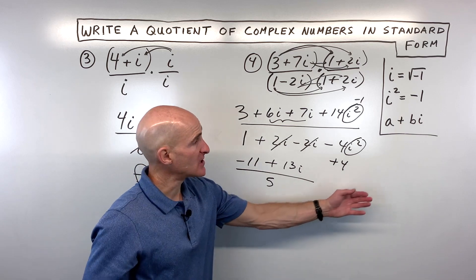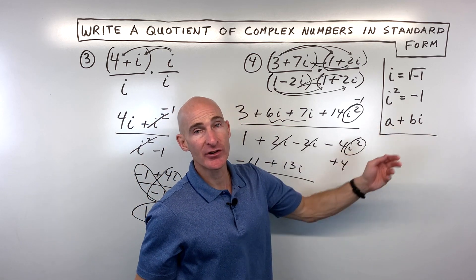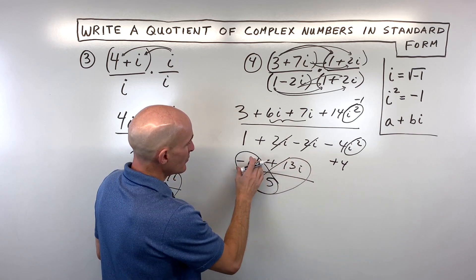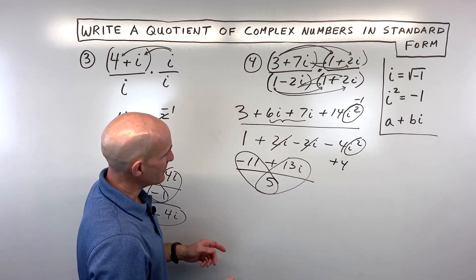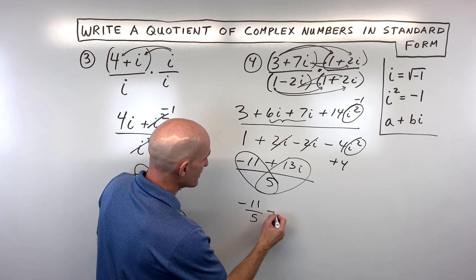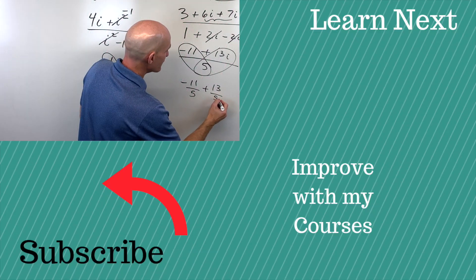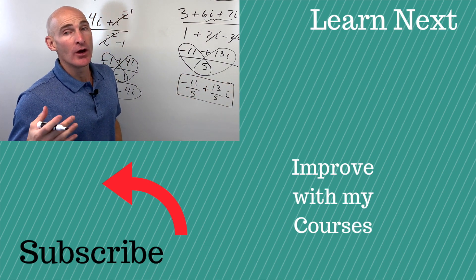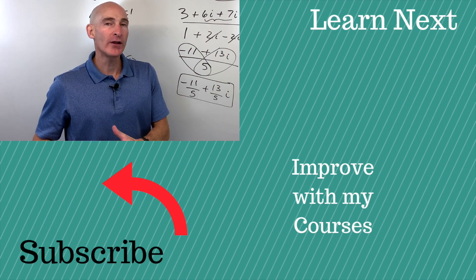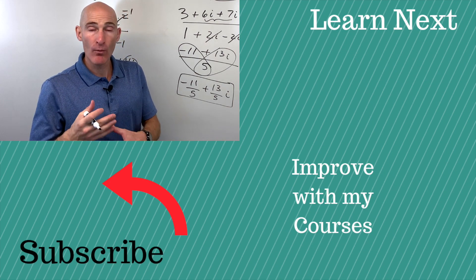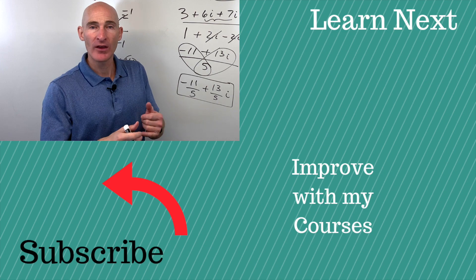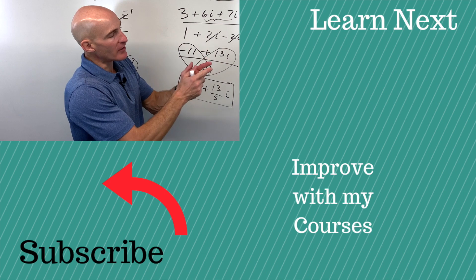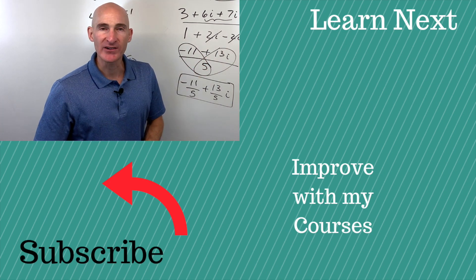We don't want to stop here — we want to split it into the real and imaginary parts in standard form. Splitting into two fractions gives us negative 11 fifths plus 13 fifths i. Great job if you were able to follow these examples. If you want to learn more about complex numbers, I did a more comprehensive video on adding, subtracting, multiplying, and dividing. Follow me over to that video and you can get some more practice — I'll see you over there.